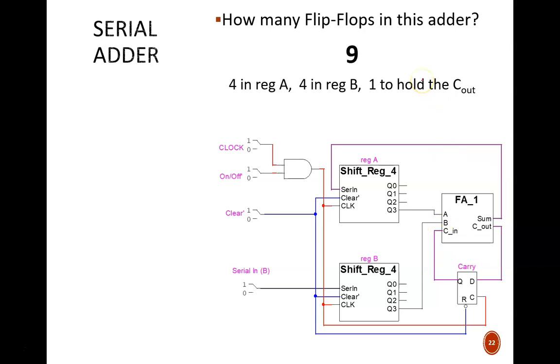The answer is 9. There are four flip-flops in this top 4-bit register. There are four in the bottom register. And then there is 1 D flip-flop down here.